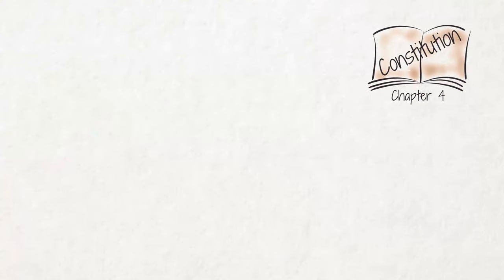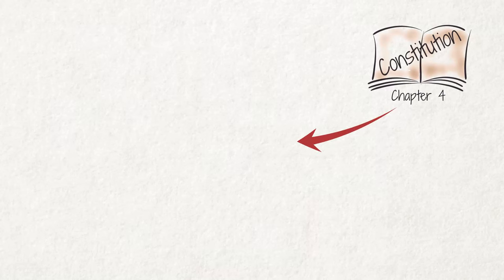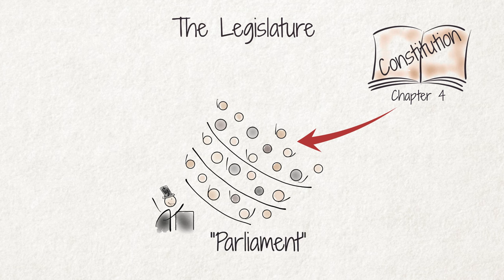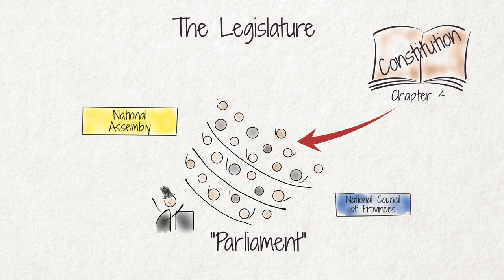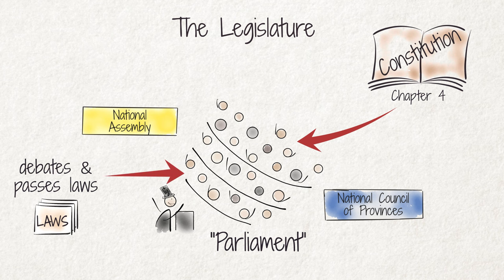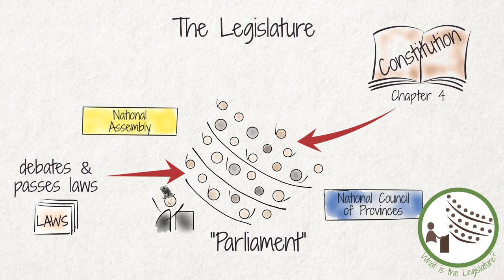Chapter 4 of our Constitution establishes the legislative branch. The legislature is also known as Parliament and consists of two houses: the National Assembly and the National Council of Provinces. This is where laws are debated and passed. We explain the tasks and responsibilities of the legislature in more detail in our video, "What is the legislature?"